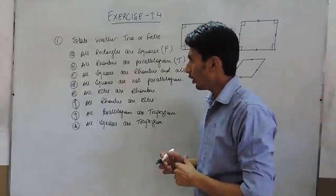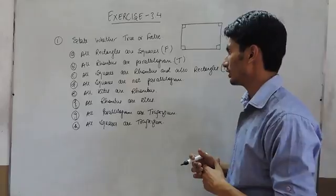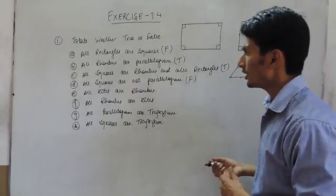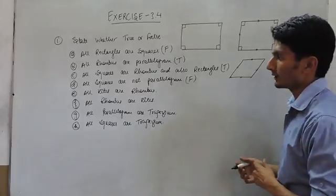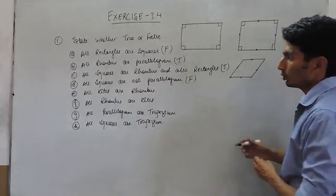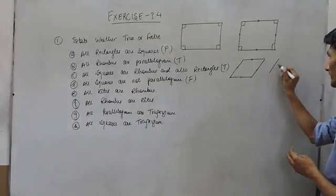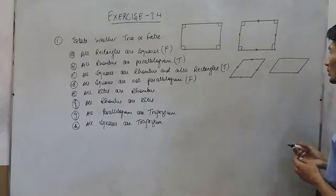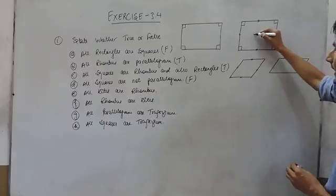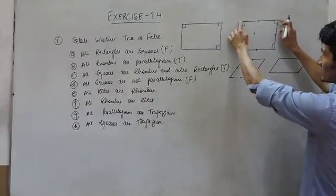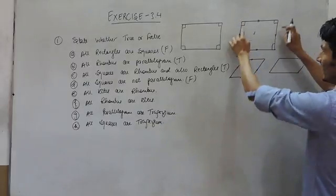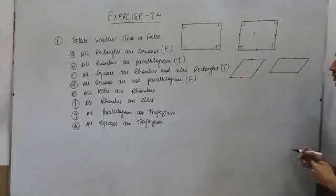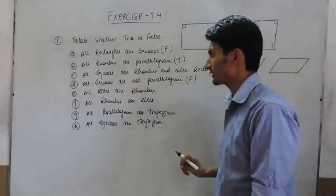In statement D, all squares are not parallelograms. This is false because all squares are parallelograms. A parallelogram is a figure whose opposite sides are equal and parallel, and a square is a figure whose opposite sides are equal and parallel to each other. So all squares must be parallelograms. So this is a false statement.